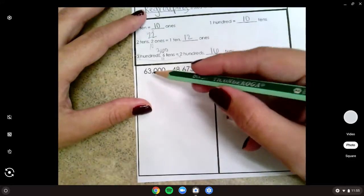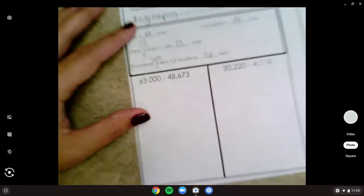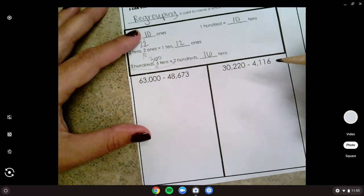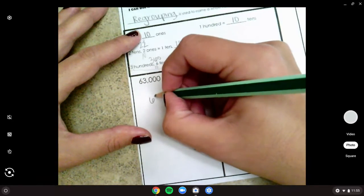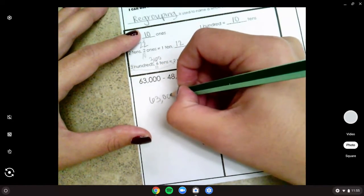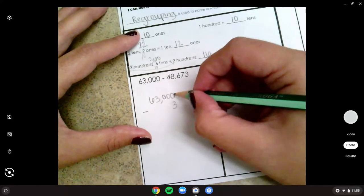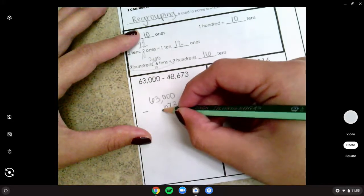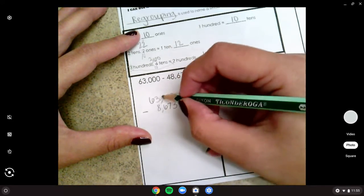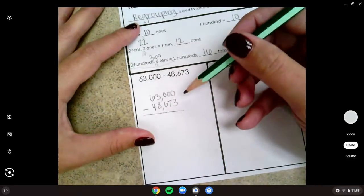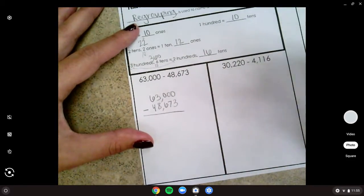Okay, so let's look at 63,000 minus 48,673. First thing I need to do in my algorithm, remember, is stack up my numbers nice and neat. Minus, and I'm going to work backwards. I'm going to line up my ones, my tens, my hundreds, my thousands, and my ten thousands.